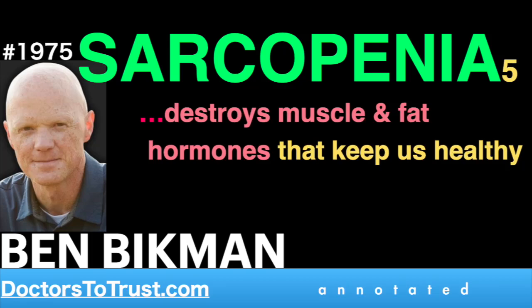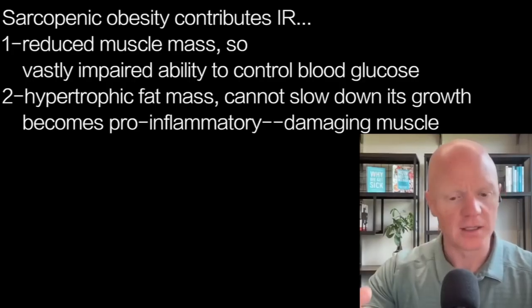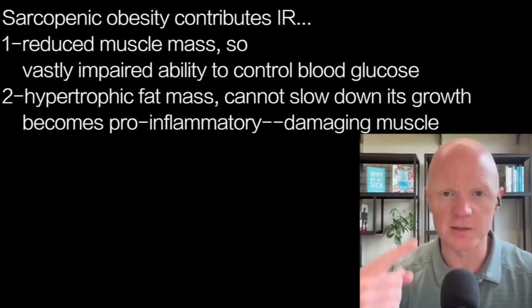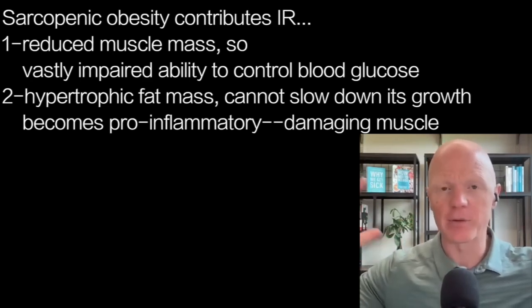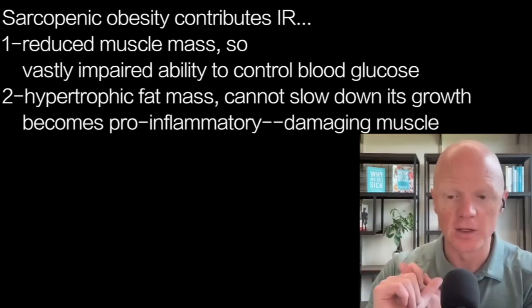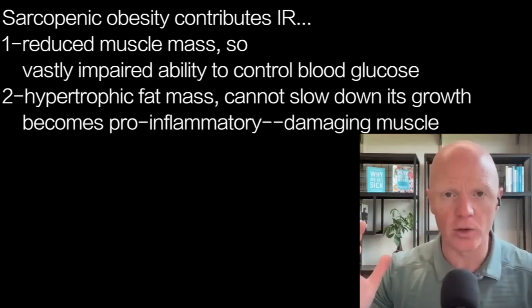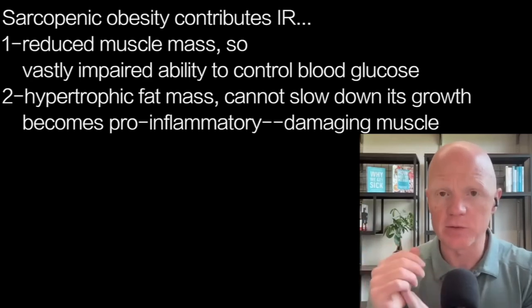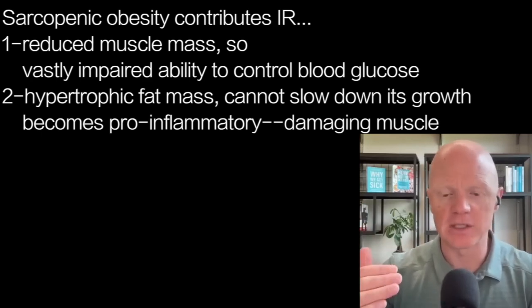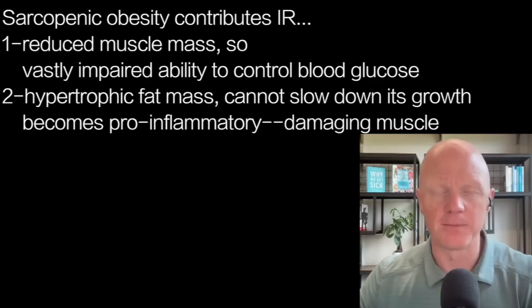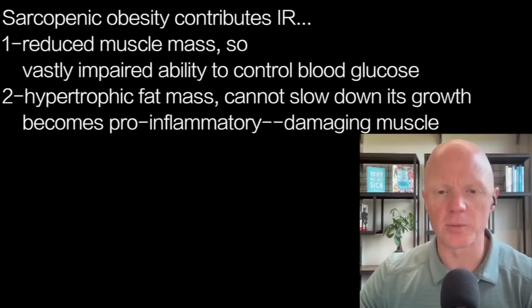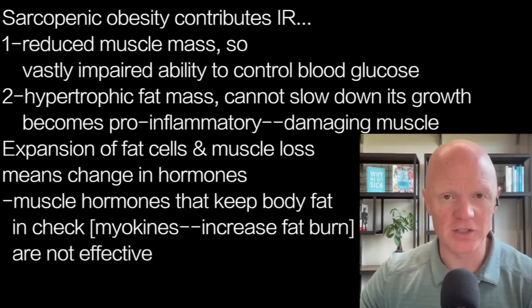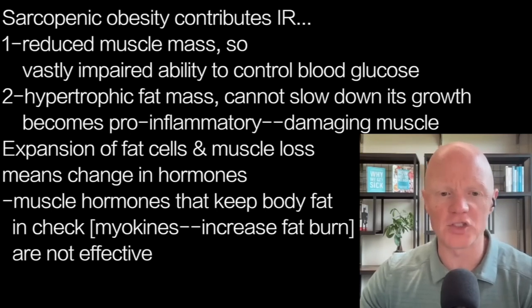Let's come back to this directionality I've posed, which is the effects of sarcopenic obesity on insulin resistance. With the loss of muscle mass comes the loss of the main insulin-responsive glucose-handling tissue. With obesity, the hypertrophic fat cell not only becomes insulin resistant to slow down its own growth, but also becomes pro-inflammatory. The influence of inflammatory cytokines on muscle was mentioned earlier — directly affecting the muscle — but also with sarcopenic obesity, the loss of muscle and expansion of fat cells brings a pretty profound change.